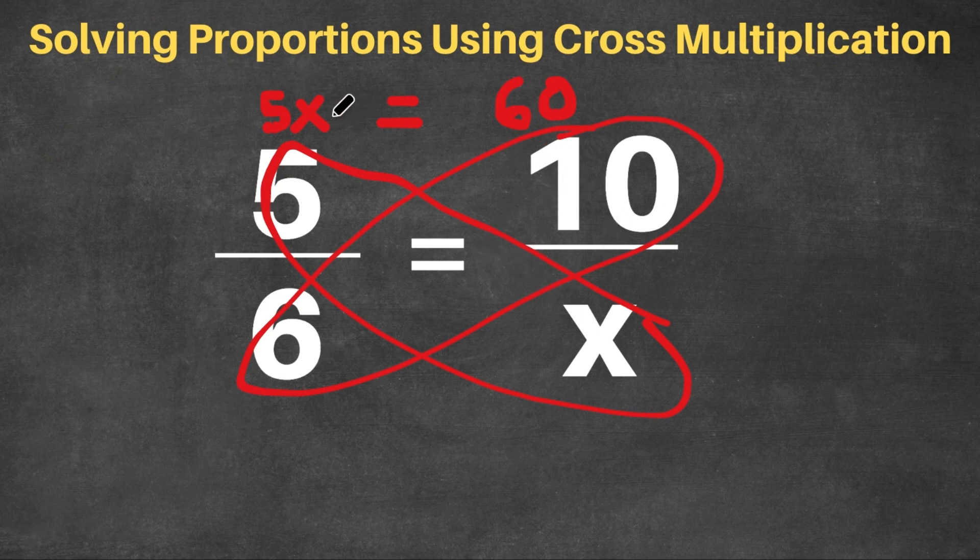So now, we could simply just solve for x. If we divide 5 on both sides, we get x equals 12. Because 60 divided by 5 is 12. So our answer to this proportion problem is 12. x is equal to 12. 5 over 6 equals 10 over 12.